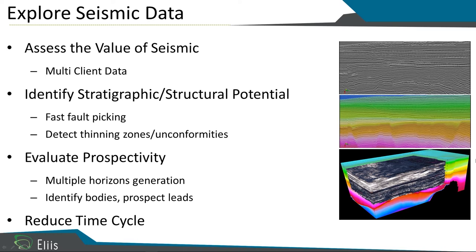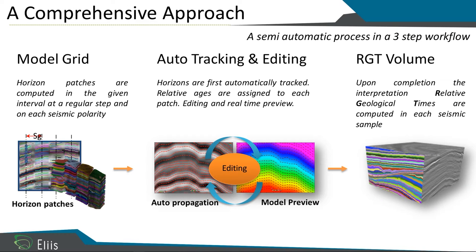We can also evaluate all the prospectivity of the data. Because we can deal with large data in a short amount of time, it is easy to reduce the time cycle. PaloScan is based on a comprehensive approach. The first step is to generate the grid — we compute thousands of patches based on the amplitude of the seismic. Then PaloScan auto-tracks all the events, linking all the patches together. We end up with thousands of horizons, and then the geoscientist will QC what PaloScan has generated in order to produce the best RGT model possible.